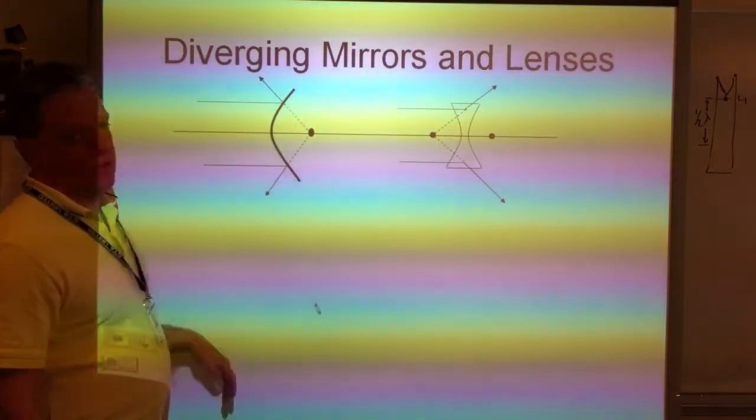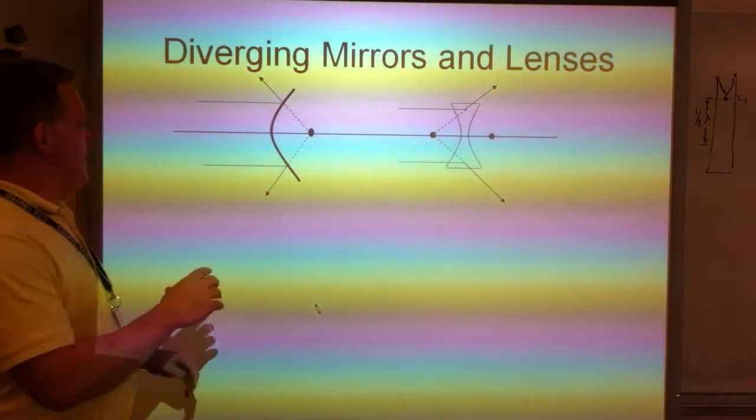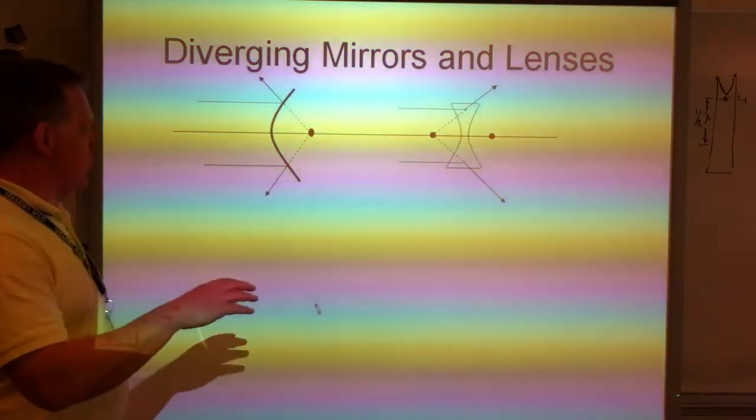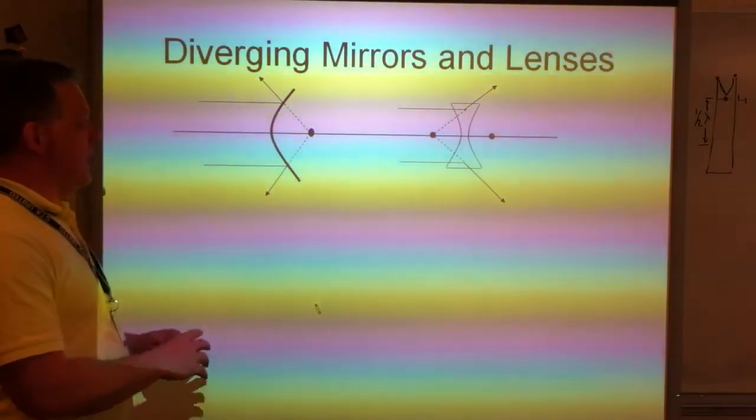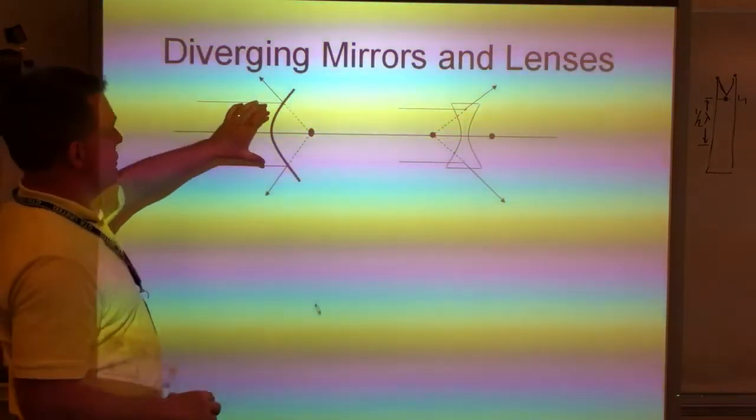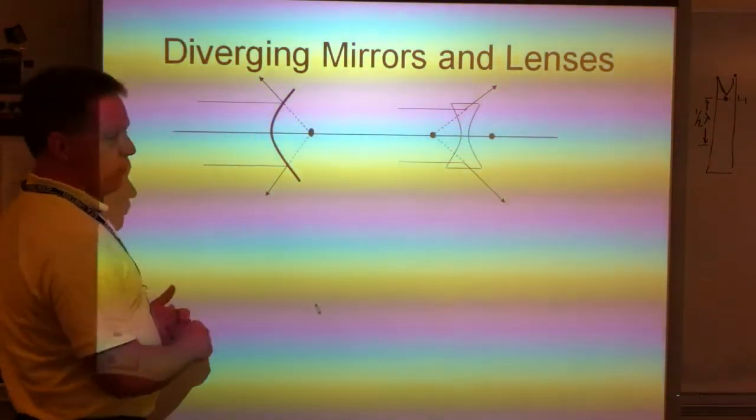Today's lesson is going to be about diverging mirrors and lenses. A diverging mirror and lens is one where instead of converging to a focal point, parallel rays are going to diverge or go away from a focal point.